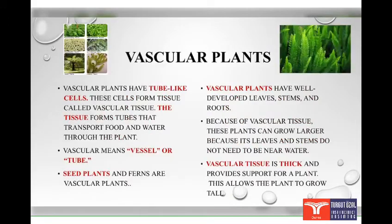Scientists have divided the plants into large groups. Vascular plants have tube-like cells. These cells form tissue called vascular tissue. The tissue forms tubes that transport food and water through the plant. Vascular means vessel or tube.